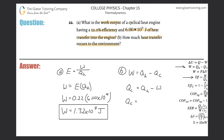Q sub H was 6.00 times 10 to the 9th. The work we just found was 1.32 times 10 to the 9th. So this is 6 times 10 to the 9th minus 1.32 times 10 to the 9th — just the difference between the two. That's going to be 4.68 times 10 to the 9th joules.